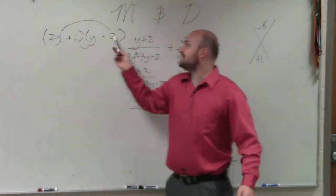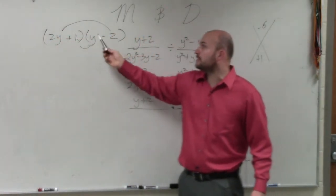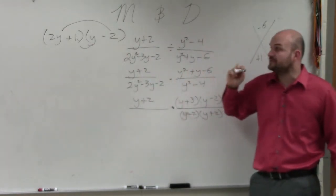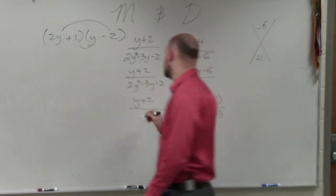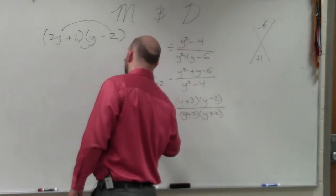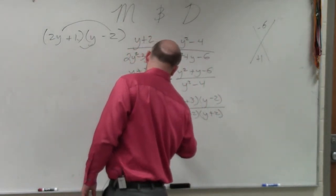So what I kind of just looked at in my head is if I did negative 2 and positive 1 over here, now I have 2y times negative 2, which is negative 4, y times 1, which is positive 1, which gives me negative 3y, which is exactly my correct version. So therefore, I have 2y plus 1 times y minus 2.